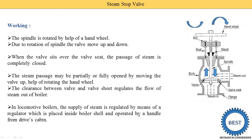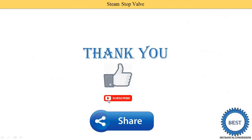The regulator is placed inside the boiler shell and operated by a handle from the driver's cabin. When running the train at high speed, more steam is required, so the driver opens the valve using the handle. To stop the train, the driver closes the valve. This valve is used in locomotive boilers as well as other types of boilers.